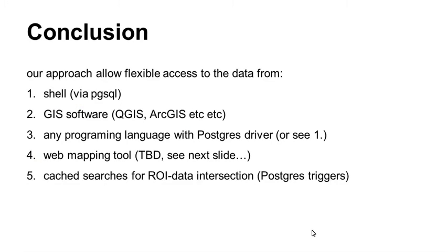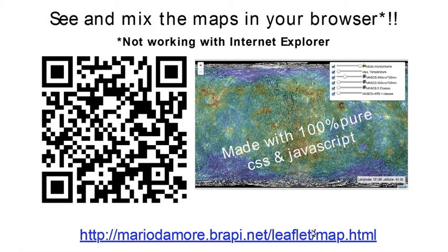We use this approach to get all the data via shell, via GIS software, and different software tools. You can plug it into any language that can use a Postgres driver. We started trying to use a web mapping tool, and we have cached searches for regions of interest — because we are talking about tens of thousands of regions. I've started playing a bit with an easy web mapping tool, and if you go to the link I can send to Slack, you can just play with the data.